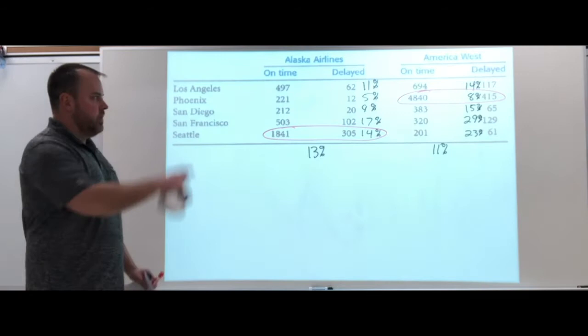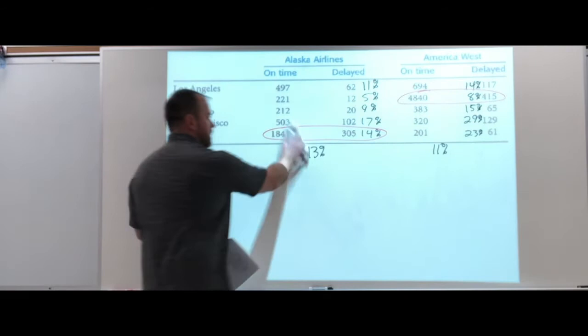So the volume, where the volume is and what the percentage is at that high volume is going to affect the overall percentages. And it flipped. The cities were all lower for Alaska, but overall Alaska had the highest delay.